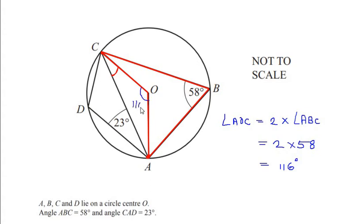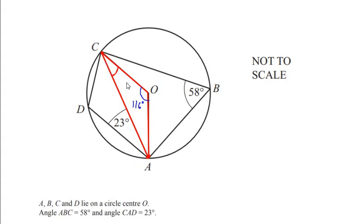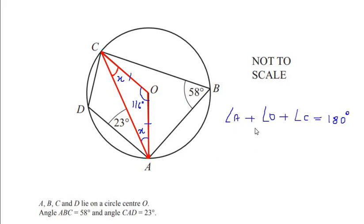So 116 degrees is the angle at the center. Now to find angle OCA, let us consider triangle OCA. Triangle OCA is isosceles because side OC equals side OA — both are radii of the circle. So if angle C is taken as x degrees, then angle A is also x degrees. Using the angle sum property of the triangle, we can write: angle A plus angle O plus angle C equals 180 degrees.